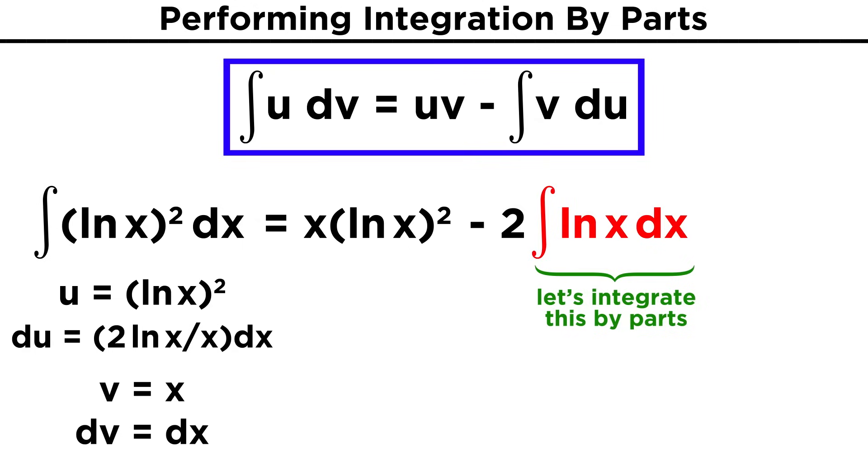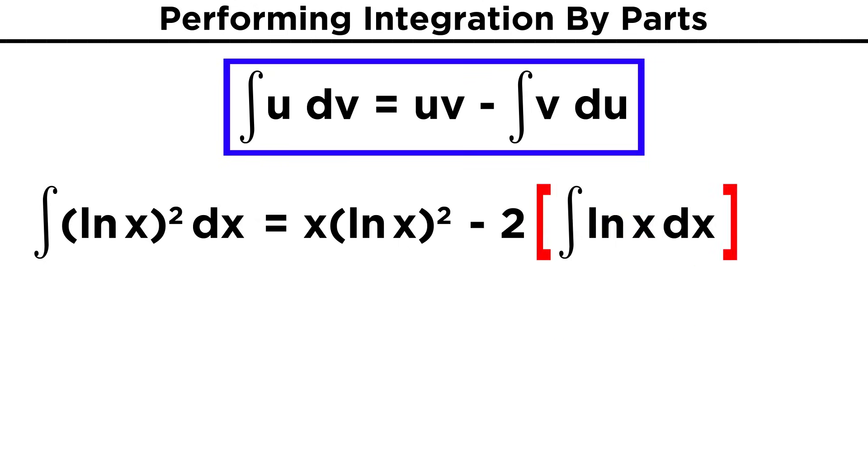It may seem unfair to have to do this twice, but in performing this technique, we produce a new integral, and if that second integral must be integrated by parts, then that's just what we have to do. Let's put some brackets around this integral so that we don't make any careless arithmetic errors.